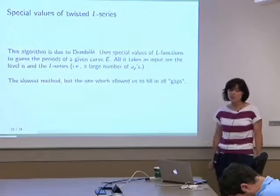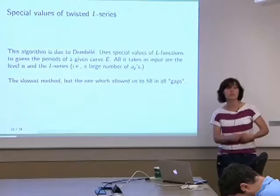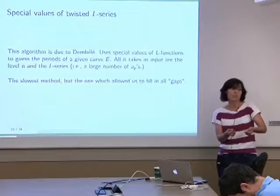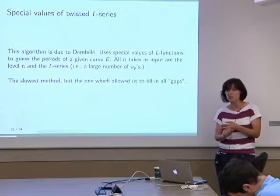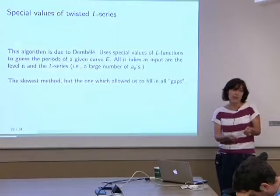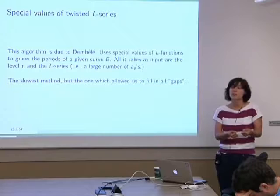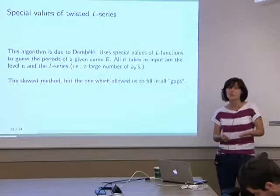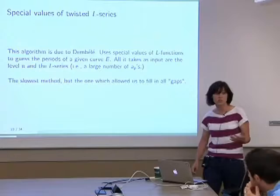Finally, we use an algorithm of Dembele. We don't have anything analogous to what Cremona did with modular symbols — looking at special values of L-functions to create the period lattice and go back to find the elliptic curves from the modular forms. Something that looks on the surface very close is Dembele's algorithm, where he takes special values of L-functions and special values of twists of L-functions to guess the period lattice, or the periods of the elliptic curve. You get several guesses at the period, work backwards knowing the conductor, and get a very good guess at the discriminant. This was what was able to find the last few curves the former methods were unable to.